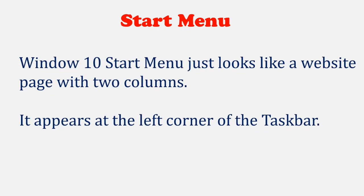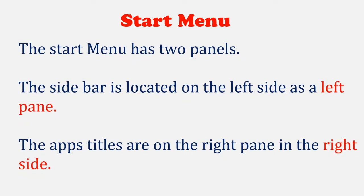Start Menu. The Windows 10 Start Menu looks just like a website page with two columns. It appears at the left corner of the taskbar. The Start Menu has two panels: the sidebar is located on the left side as the left pane, and the app tiles are on the right pane.